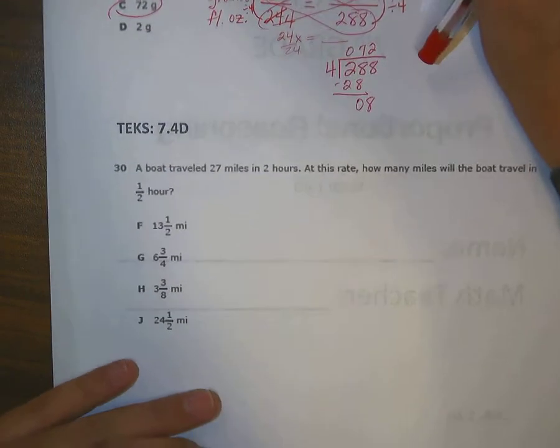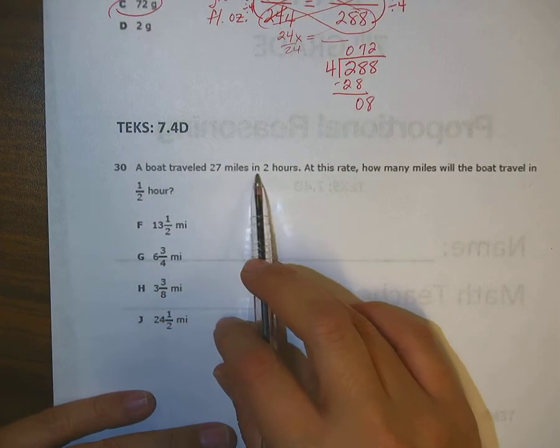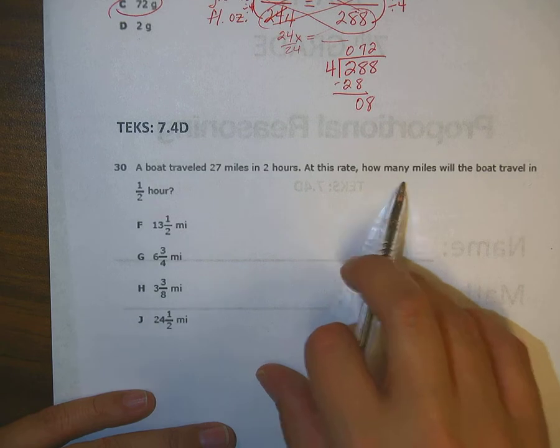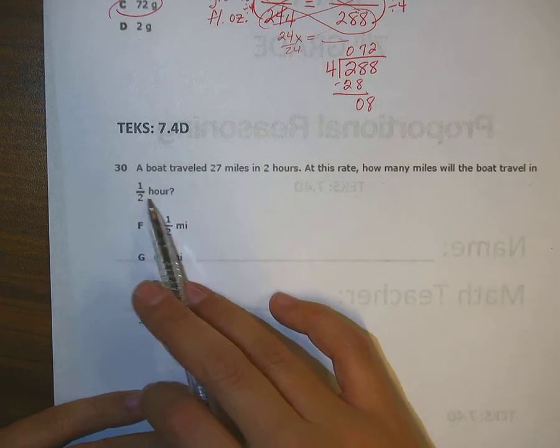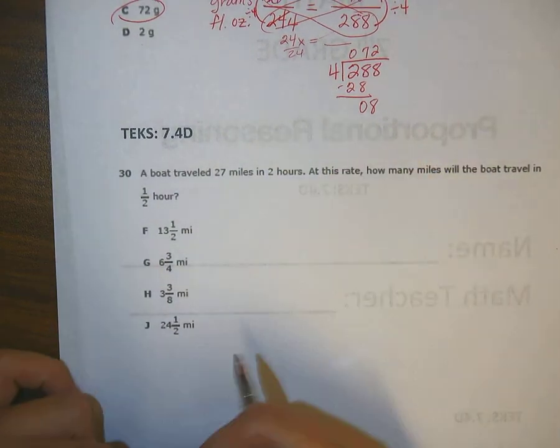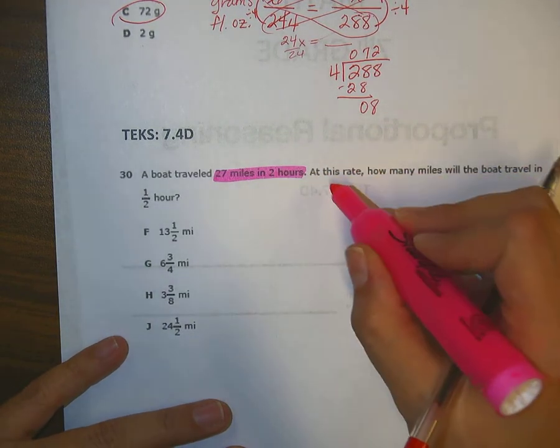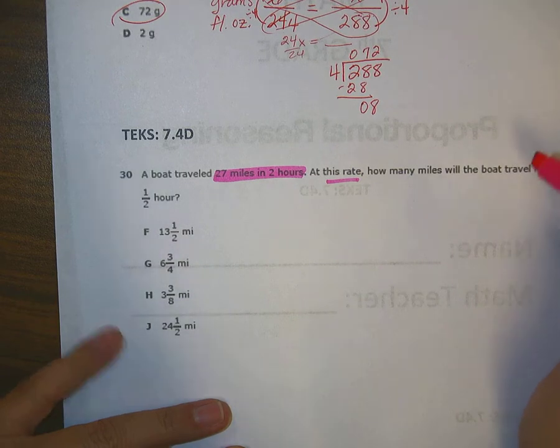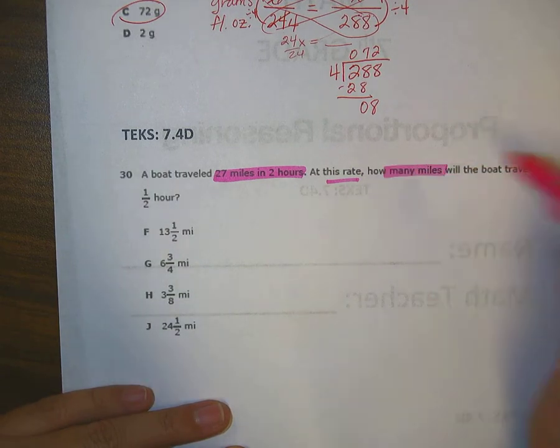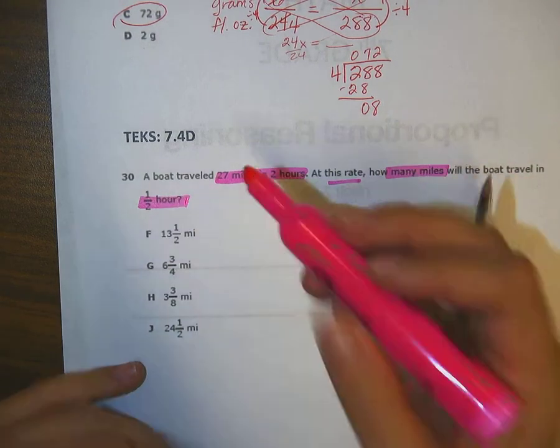Okay, number 30 on this page, 7.4D. A boat traveled 27 miles in 2 hours. At this rate, how many miles will the boat travel in a half hour? Okay, so we're traveling 27 miles in 2 hours. And then it says at this rate, so we are looking at rates.